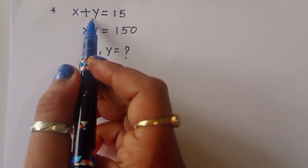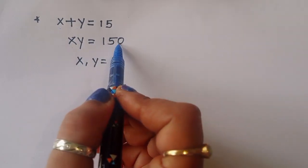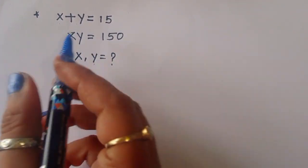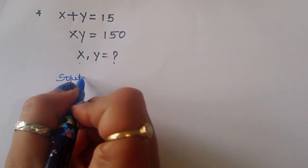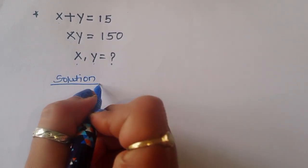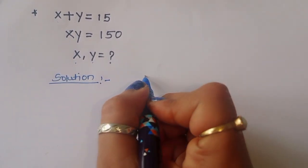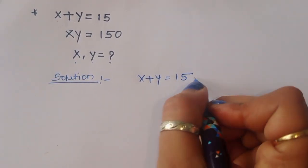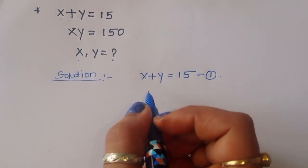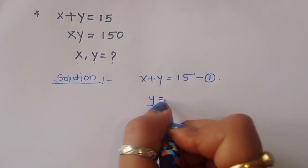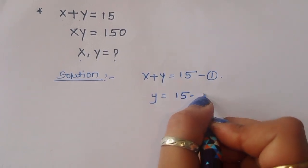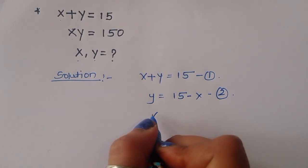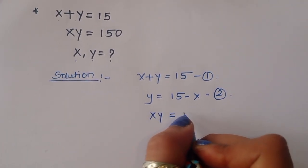The question gives us x plus y is equal to 15 and xy is equal to 150. We have to find the value of x and y. This is equation number 1: x plus y equals 15. From this we can write equation number 2: y is equal to 15 minus x.